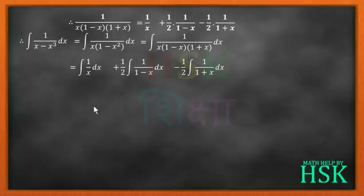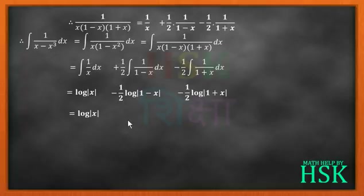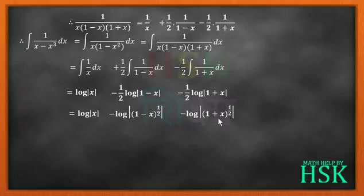Integration of 1 upon x is log x. Integration of 1 upon 1 minus x gives minus 1 by 2 times log of 1 minus x. And minus 1 by 2 times log of 1 plus x. The 1 by 2 multiplying log of 1 minus x can be written as log of 1 minus x to the power of 1 by 2, and similarly 1 plus x to the power of 1 by 2, giving log of 1 minus x to the power 1 by 2, minus log of 1 plus x to the power 1 by 2.